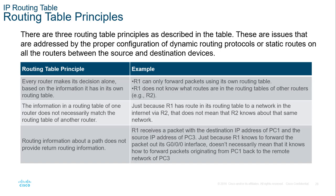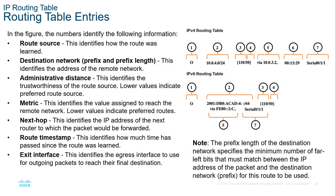There are three routing table principles to understand. First, every router makes the decision by itself. Second, a router will have a routing table that may be different from the routing information in the next router's table. Third, routing information about a path does not provide return route information — it's one way only.